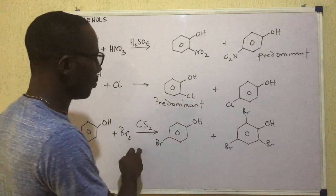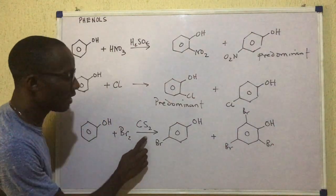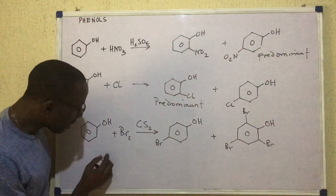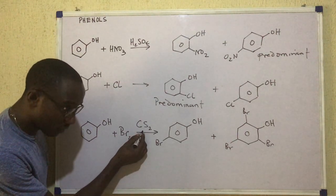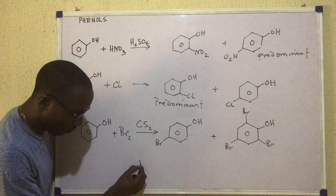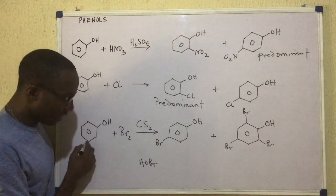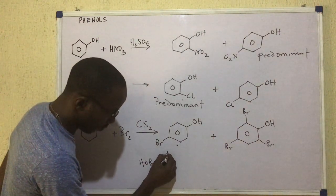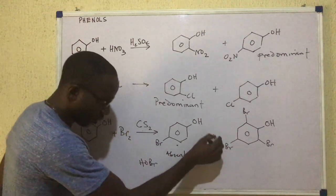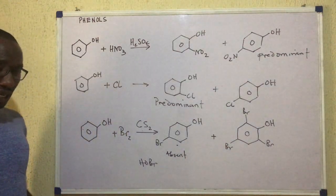That is when we use carbon disulfide as a solvent. But if I were to remove this carbon disulfide and put bromine water, which is HOBr, then this first product you are seeing would be absent and would only get that tri-brominated product.